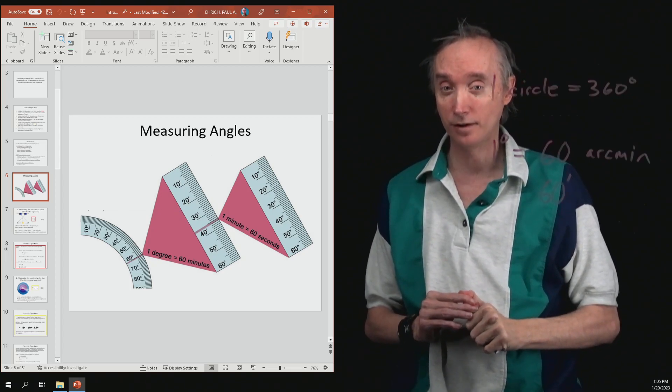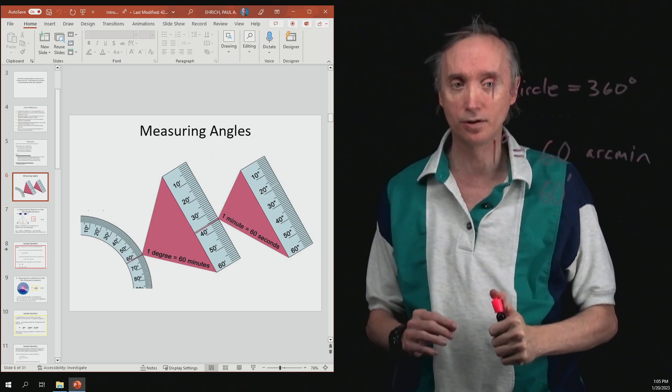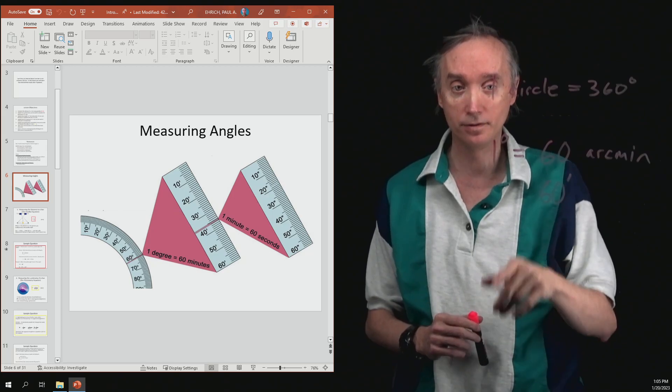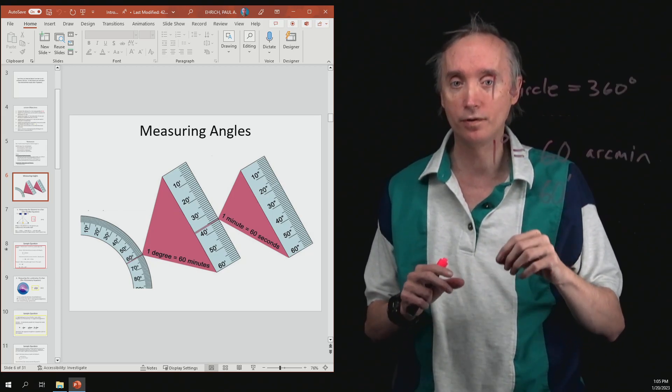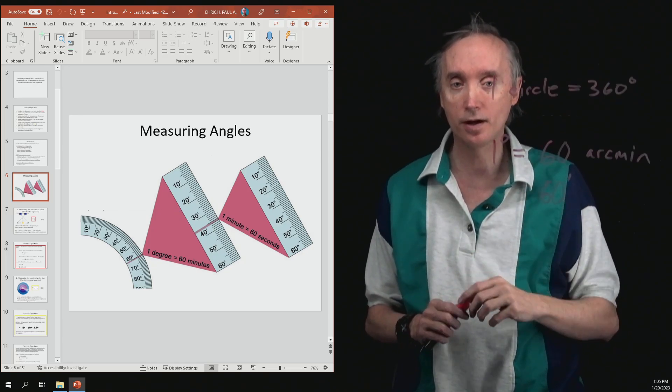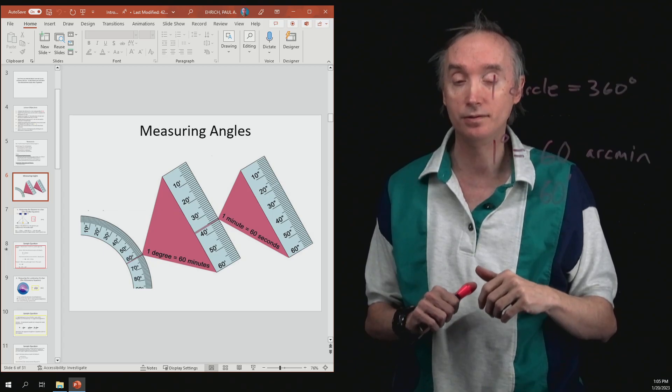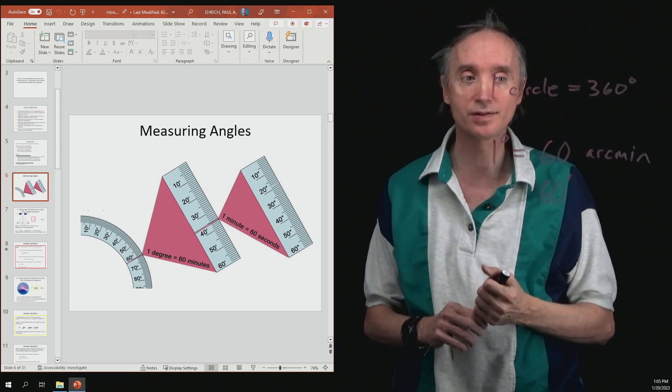Well that's not good enough for scientists because scientists can measure smaller angles than the arc minute. So imagine taking one of those teeny tiny arc minutes and chopping it up into 60 pieces. And then we're going to call those things arc seconds.